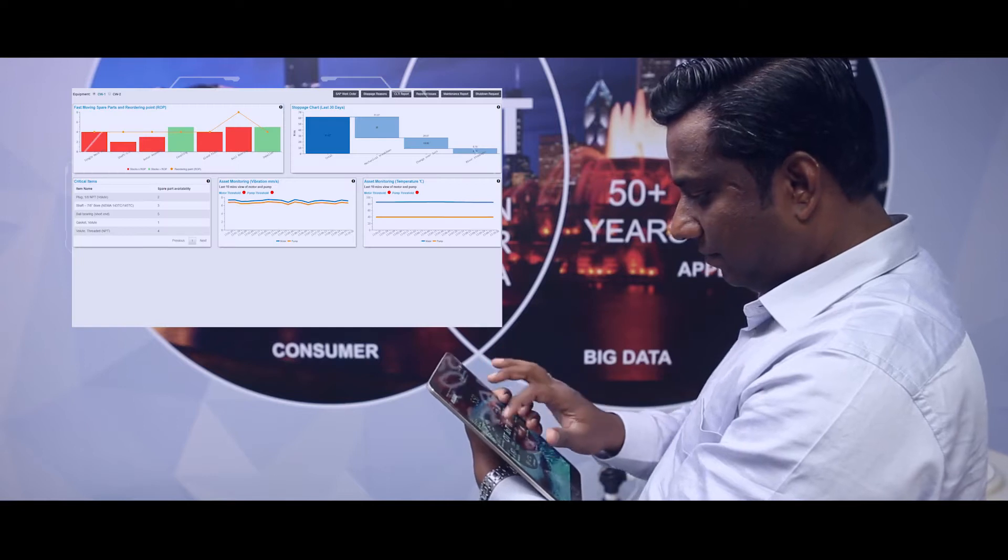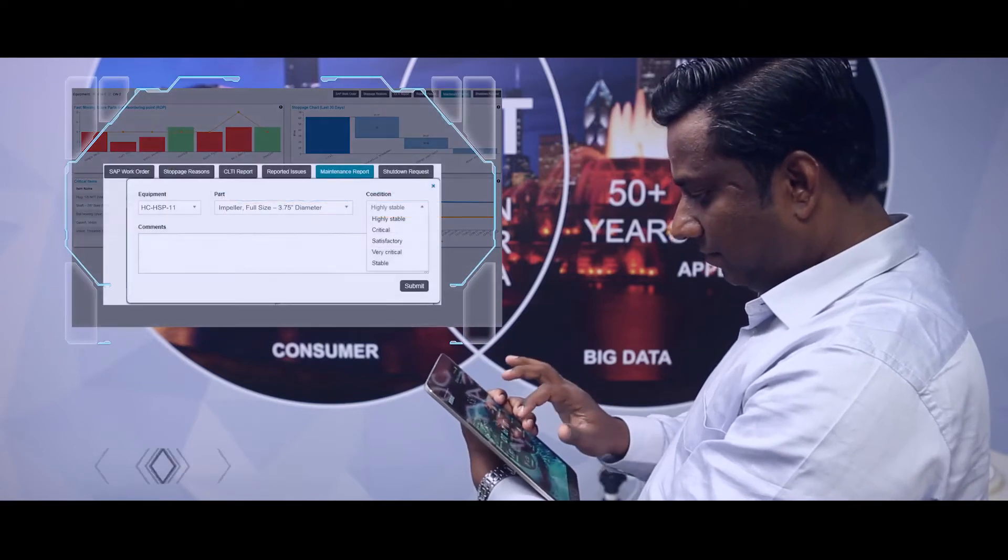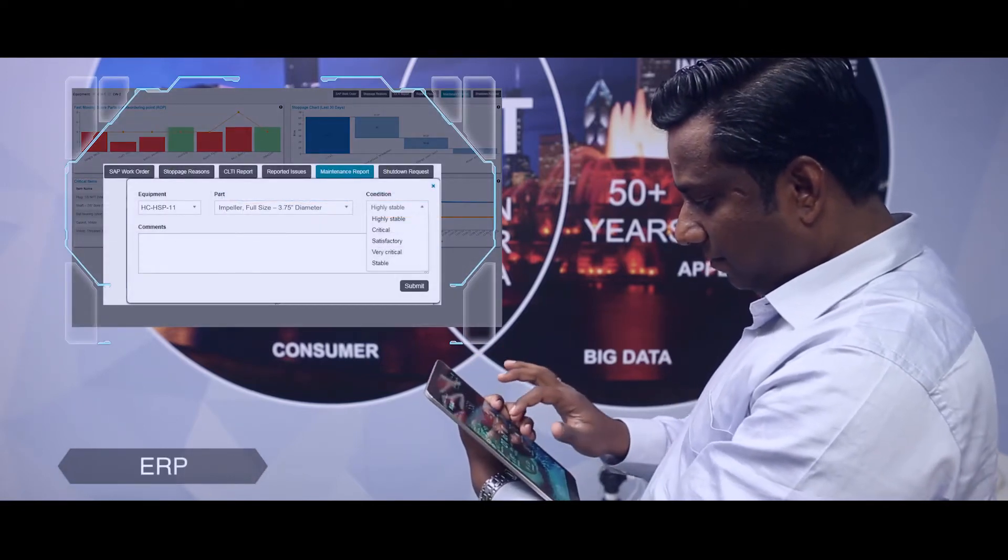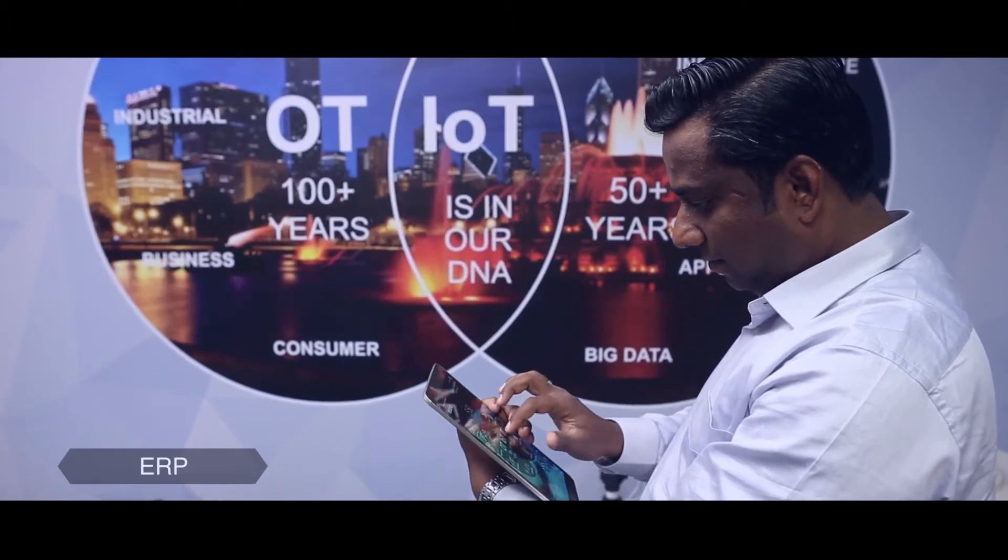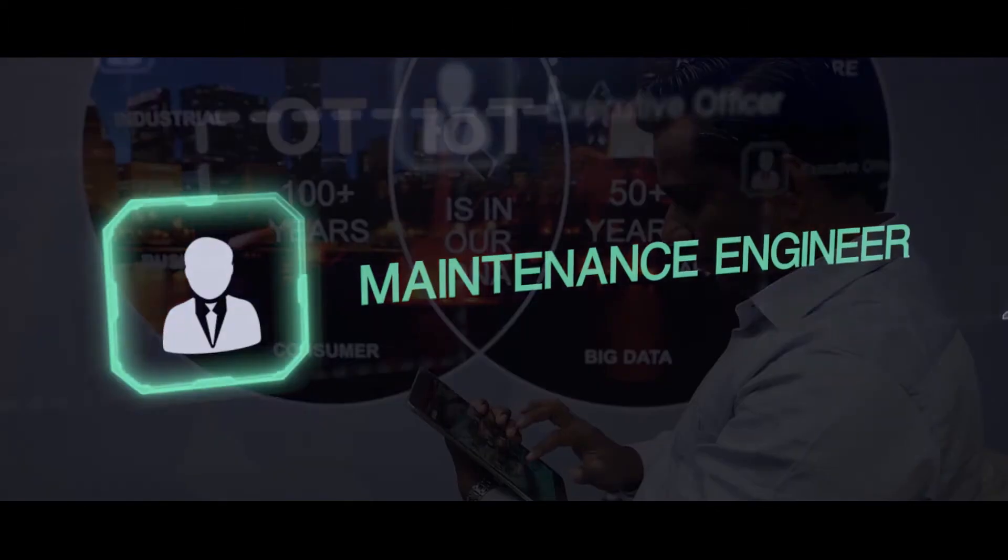He logs this report into the maintenance inspection report form. This triggers the ERP system to raise a purchase requisition automatically to procure a new impeller.